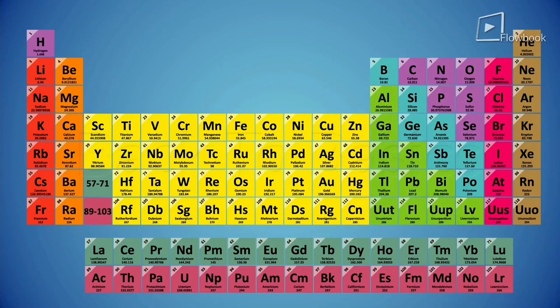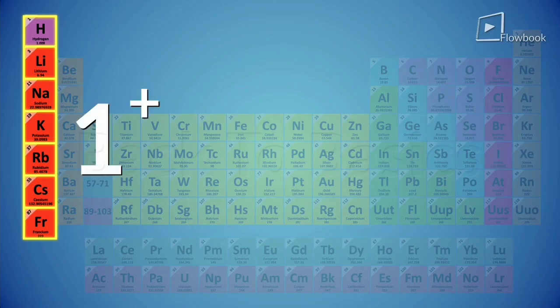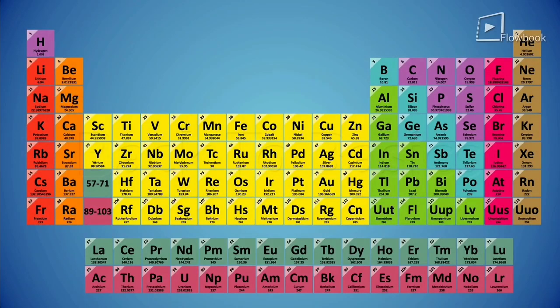Like for example, take a look at group 1. All the alkali metals in this group have the same valency which is 1+. Similarly in group 2, all the alkaline earth metals show the same valency which is 2+.